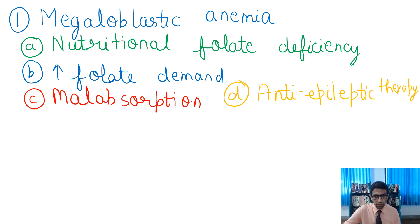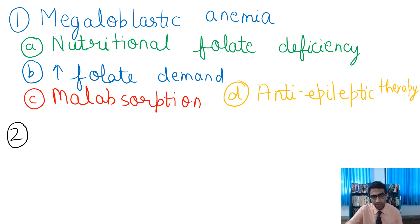So those are the uses for megaloblastic anemia. Besides that, we can give folic acid as prophylaxis of folate deficiency during pregnancy, to reduce the risk of neural tube defects in the newborn.